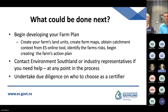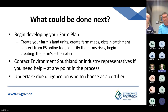Once you've done all of that, you can begin to develop your farm plan. Create your farm's land units, create farm maps — you can get help from the Environment Southland Catchment Context Tool and Environment Southland staff. Obtain your catchment context from the ES online tool, identify any farm risks, and begin creating your farm's action plan. Contact Environment Southland or an industry representative if you need help at any point, and this should be done as soon as possible. Also undertake your due diligence on who you choose as a certifier once you decide to submit for certification.